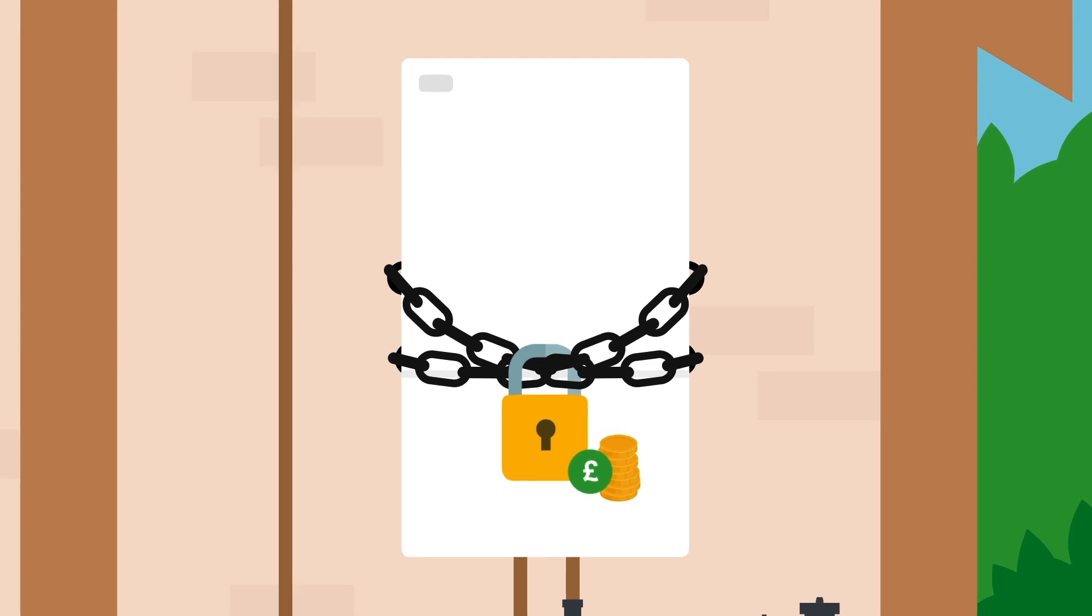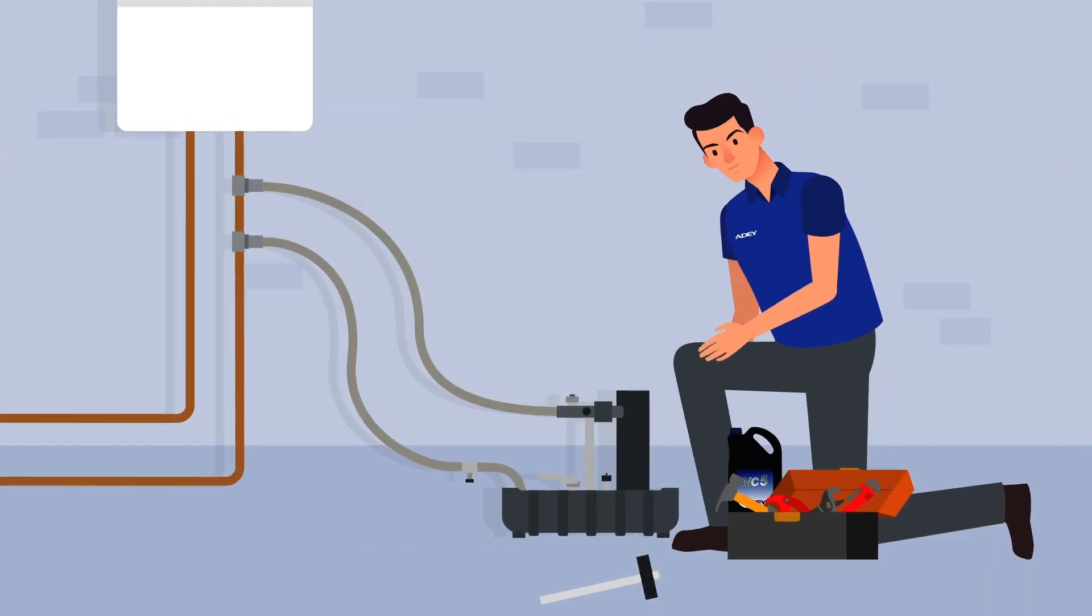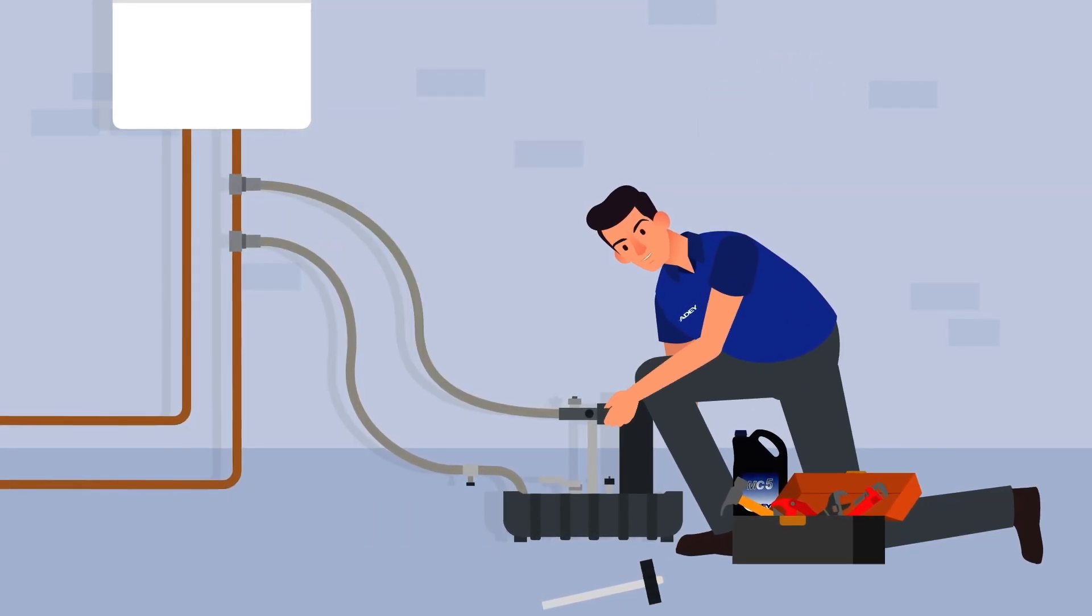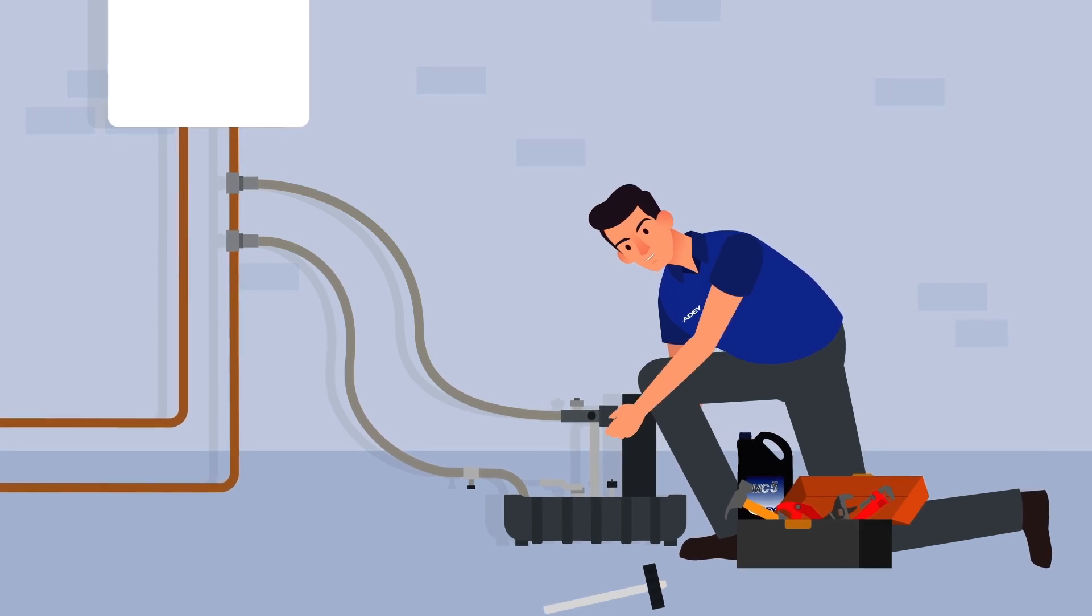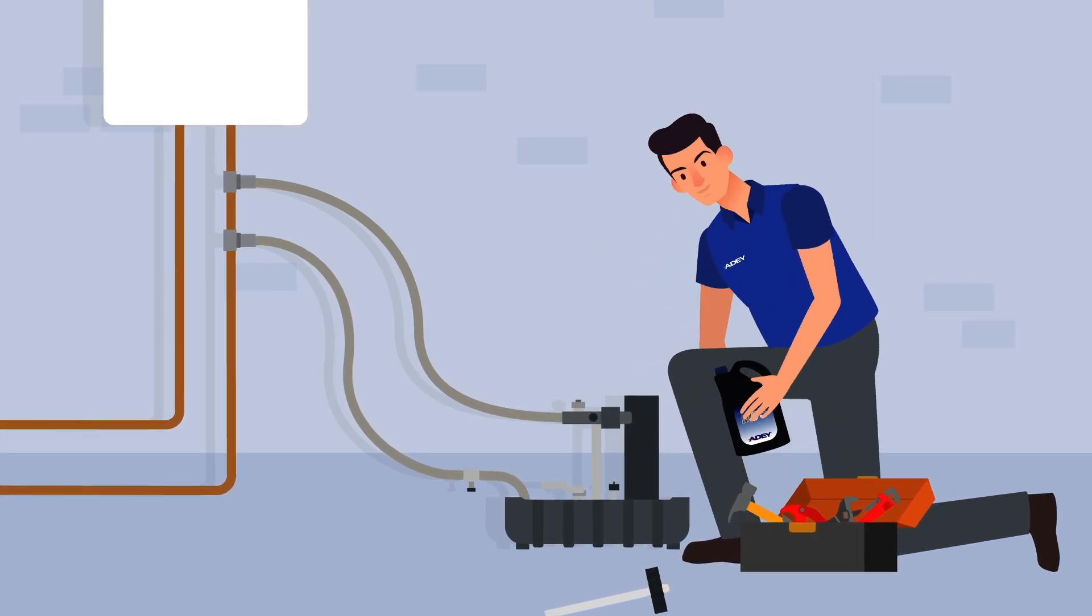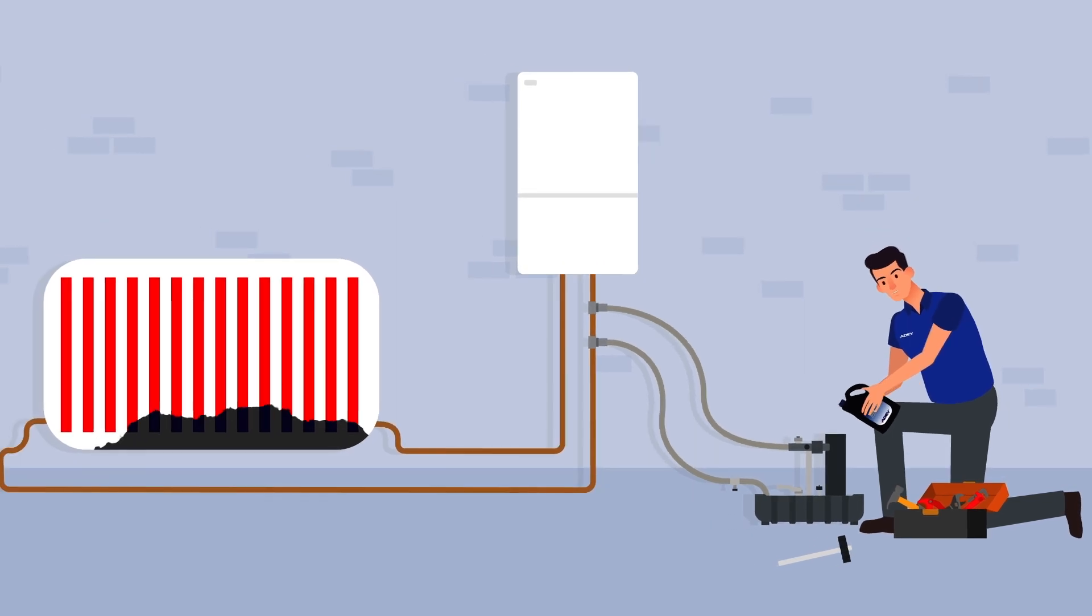Saving you money on repairs and lowering your energy bills. To clean your heating system using Magnetic Lens, your heating engineer will connect the Magnetic Lens Rapid Flush to your pipework and cleaner is added.